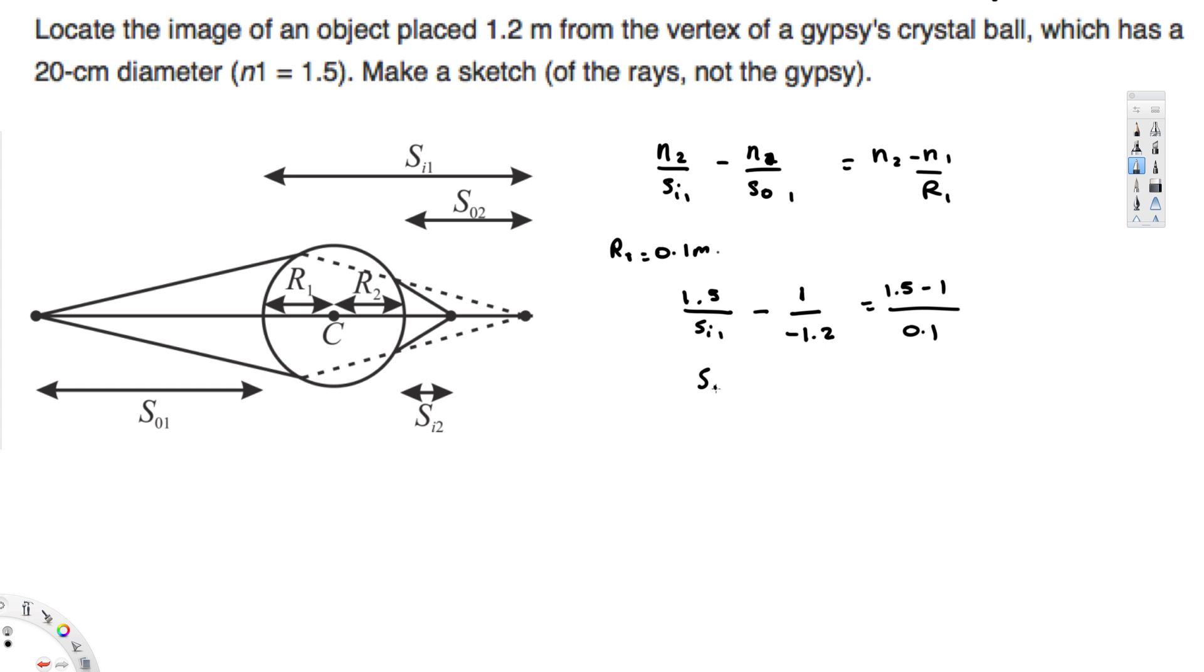And if you solve for sᵢ₁, you are going to get 0.36. Okay, and from this one, if sᵢ₁ is equal to 0.36, from this diagram you can see if sᵢ₁ is equal to 0... sᵢ₁ is here, okay, sᵢ₁ is 0.36.